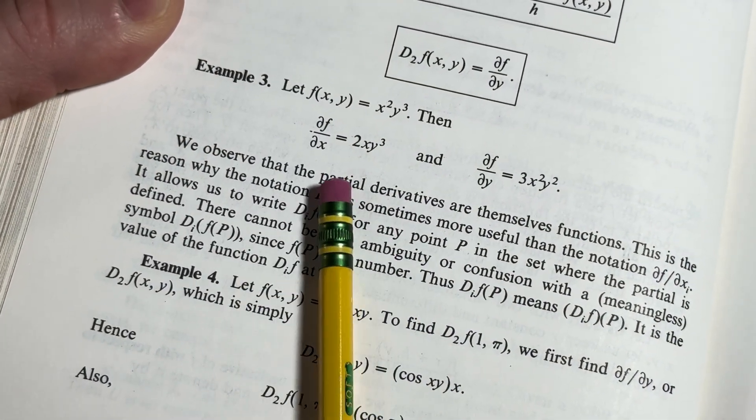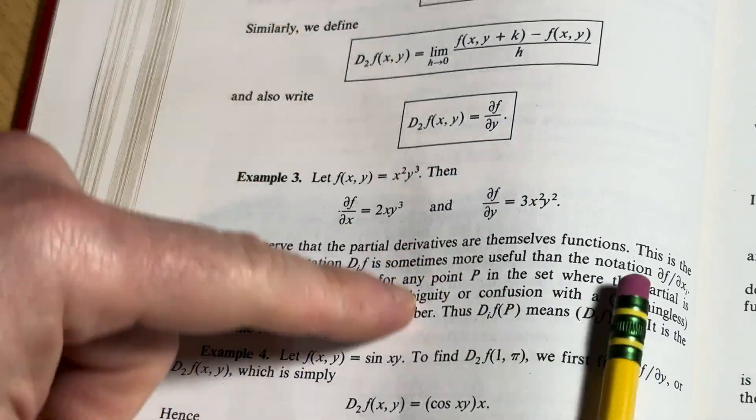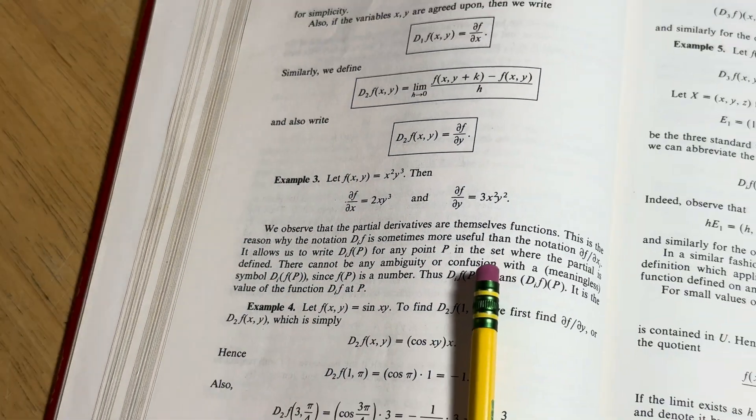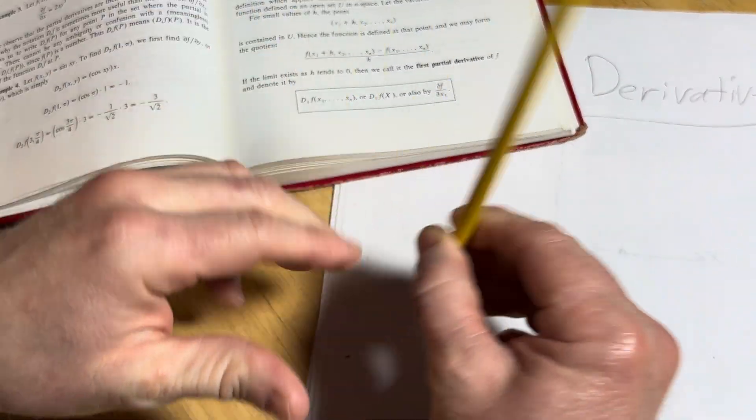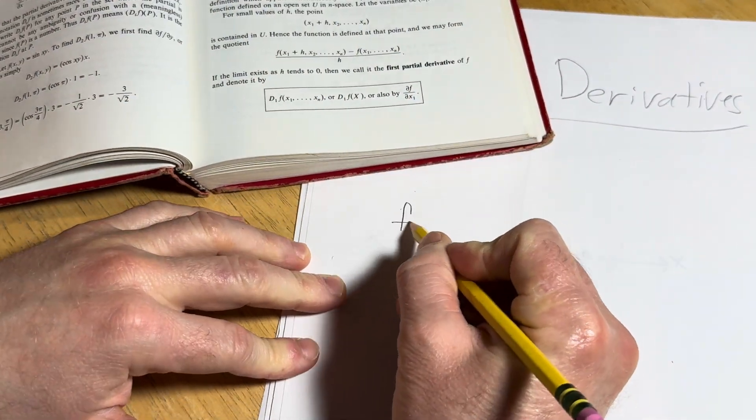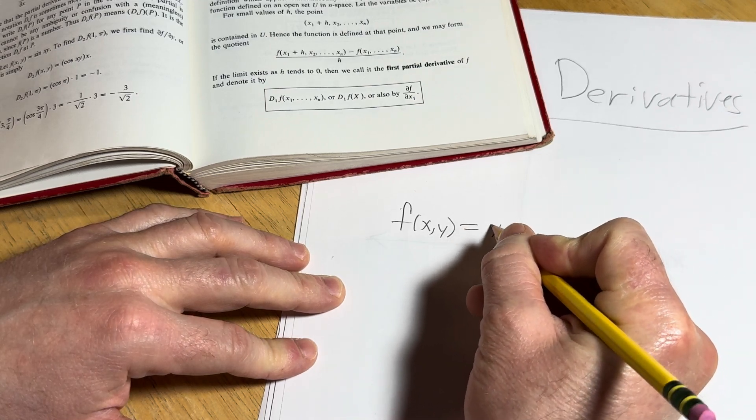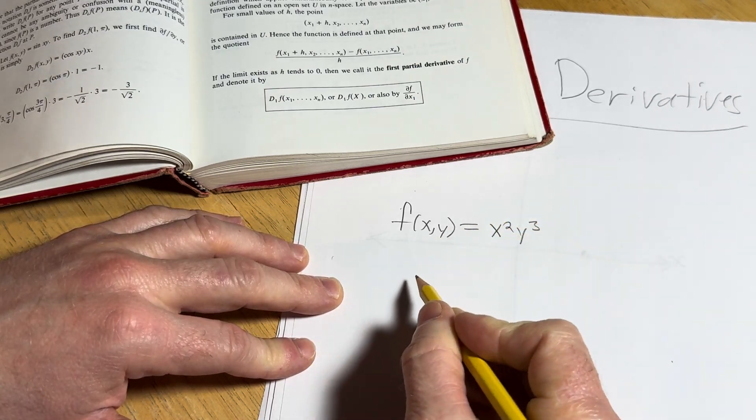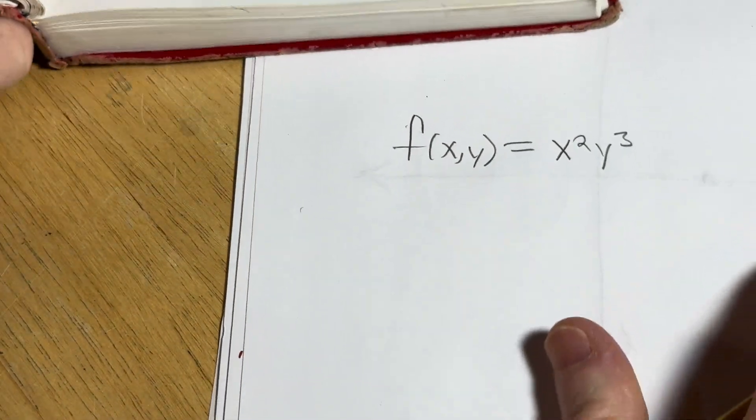And then here they have an example of a partial derivative. Let's go ahead and work through this example. And then we'll see how we're doing. So let's see. So we have a function f of x, y. It's equal to x squared, y cubed.